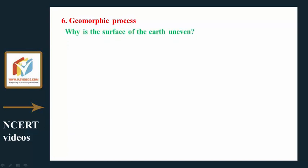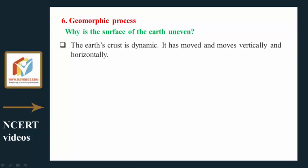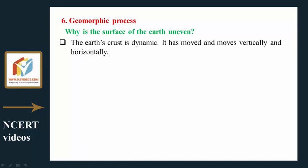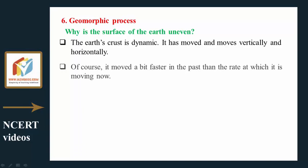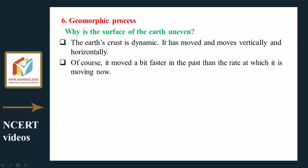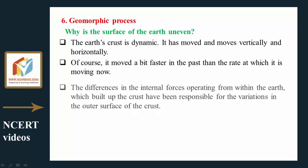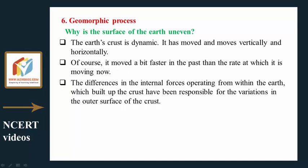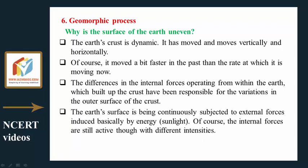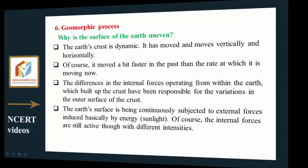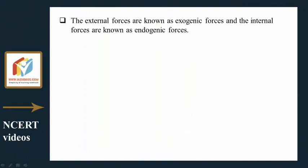Why is the surface of the earth uneven? The earth's crust is dynamic — it has moved and moves vertically and horizontally, though it moved faster in the past than now. The differences in internal forces operating from within the earth, which built up the crust, have been responsible for variations in the outer surface of the crust. The earth's surface is continuously subjected to external forces induced basically by solar energy.